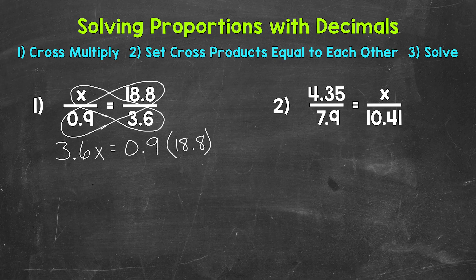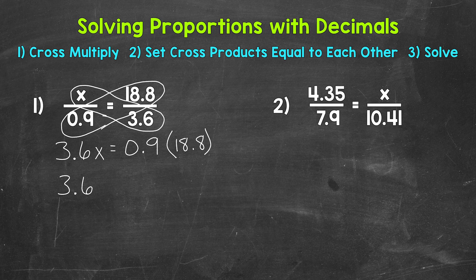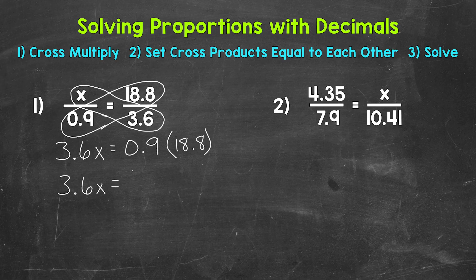Now let's multiply. So 9 tenths times 18 and 8 tenths. We can bring down the 3 and 6 tenths times x. 9 tenths times 18 and 8 tenths gives us 16 and 92 hundredths.